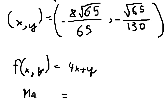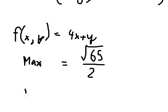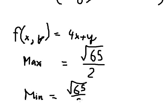So the maximum is the square root of 65 over two, and the minimum is negative square root of 65 over two. This is the end — thank you for watching.